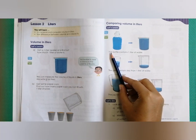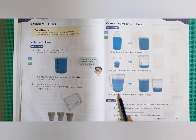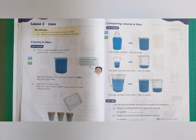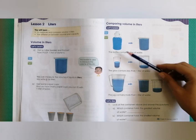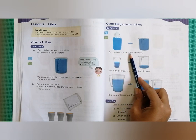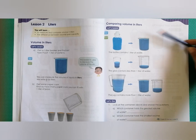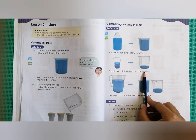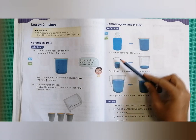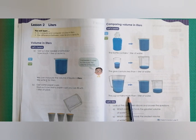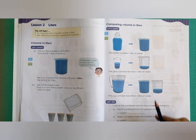Now, how to compare volume in liters. We have a bottle of water, a glass of water, and a jug of water, each compared to a one-liter container. The bottle contains exactly one liter because it exactly fills the one-liter container. The glass contains less than one liter — when we pour it into the one-liter jug we can see it is definitely less.